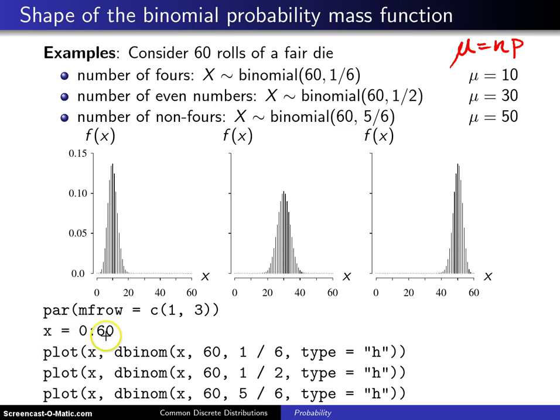Then we simply do a plot and we make X as the horizontal axis and dbinom as the vertical axis in each case. We have X, 60, and either 1/6, 1/2, or 5/6.